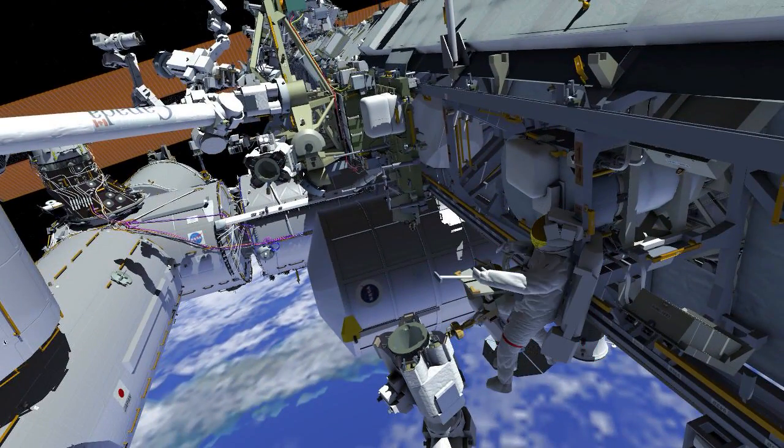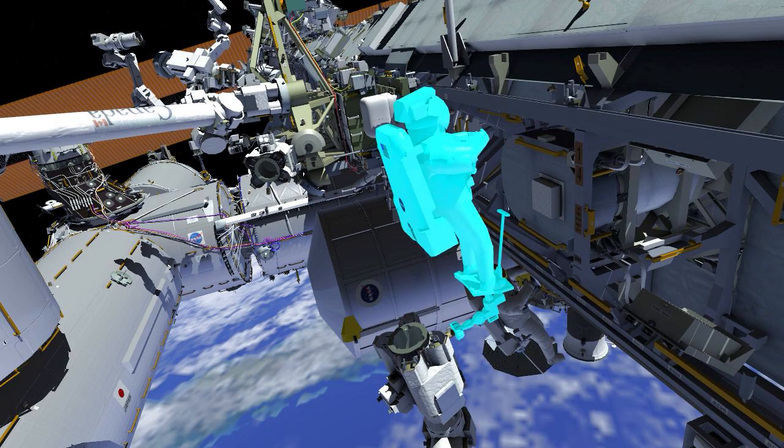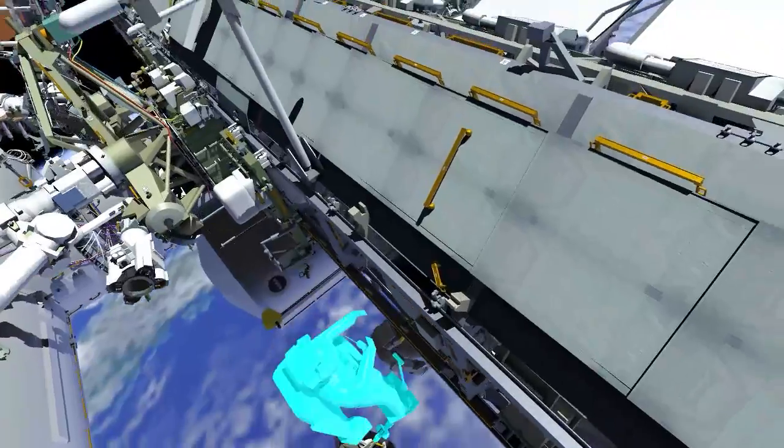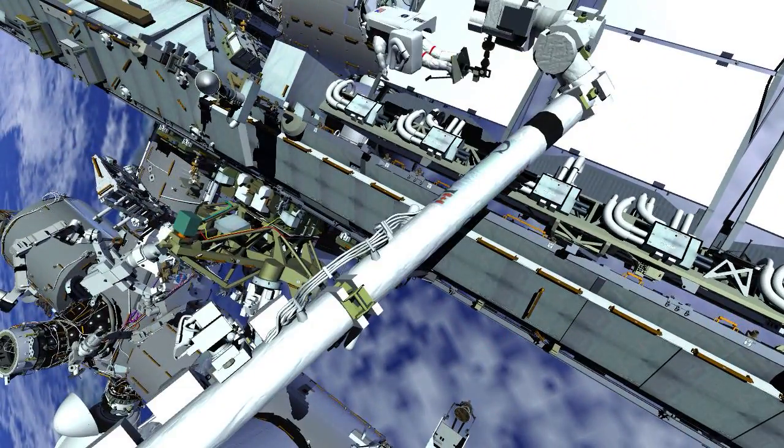After EV1 ingresses the foot restraint, the robotic arm operator flies the crew member to the most inboard port radiator beam valve module worksite.